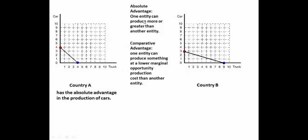Let's see which one has the absolute advantage in the production of trucks. Country A can only produce 4 trucks with its resources, but Country B can produce 9 trucks with its resources, so Country B has the absolute advantage in the production of trucks.